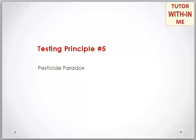Testing principle five is about the pesticide paradox. If the same set of test cases are repeated over and over again, eventually the same set of test cases will no longer find any new defects in the software. To overcome this pesticide paradox, test cases need to be regularly reviewed and revised, and new and different test cases should be written to exercise different parts of the software or the system to find potential more defects.